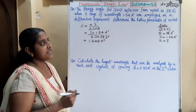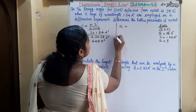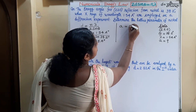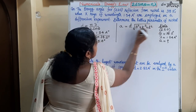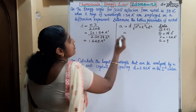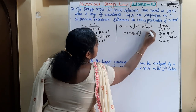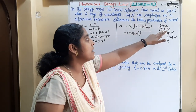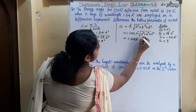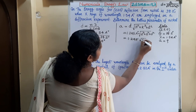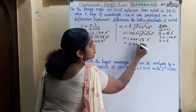This is the interplanar spacing. Now we find the lattice parameter: A equals D into root of H squared plus K squared plus L squared, that is 1.245 Angstroms into root of 2 squared plus 2 squared plus 0 squared, which is 1.245 into root of 8. On calculating, we get A equals 3.52 Angstroms.